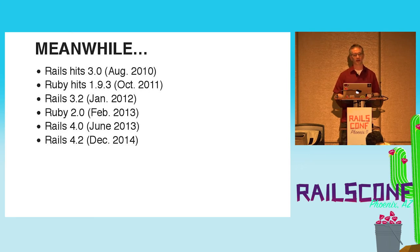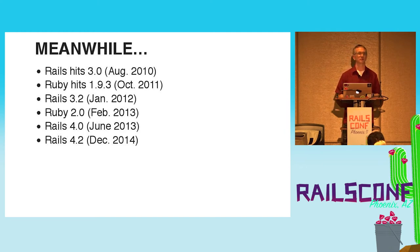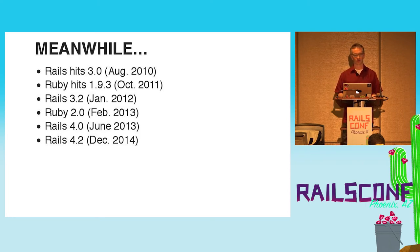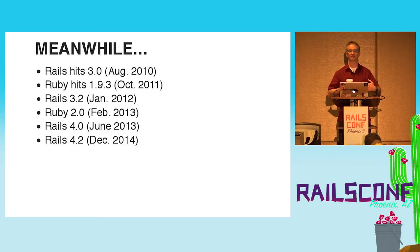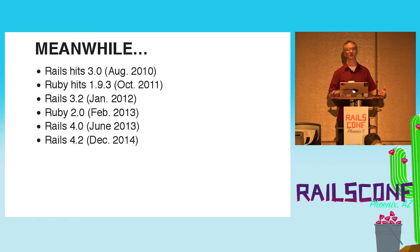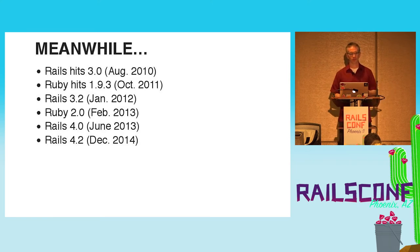This started to become a limiting factor. Rails hit 3.0 in 2010 — the big community merge with Merb, with a lot of active record changes. Ruby itself hit 1.9.3, and there was a desire to get out of the performance hit of Ruby 1.8.7. Ruby Enterprise Edition was out around then — a performance-optimized version of 1.8.7 from the Phusion Passenger folks. Rails 3.2, Ruby 2.0, Rails 4, and Rails 4.2 all followed.